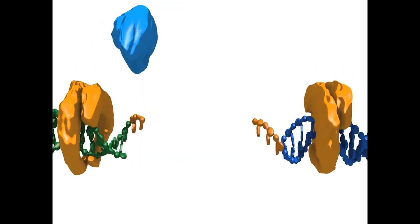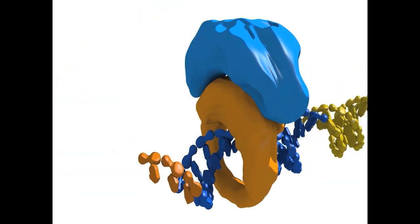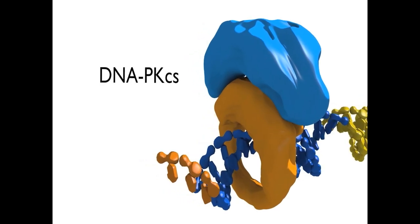Ku also recruits the DNA-PK catalytic subunit, also called DNA-PKcs.